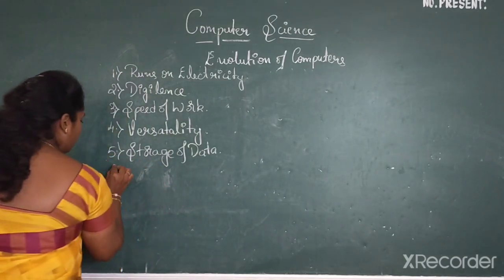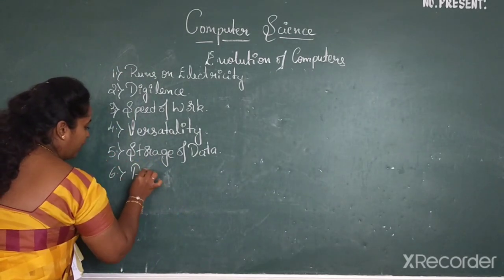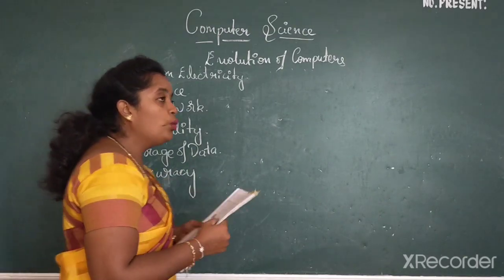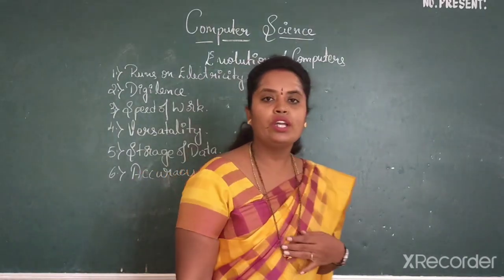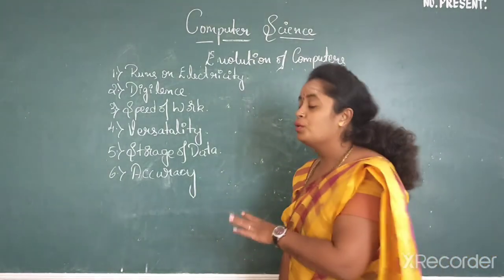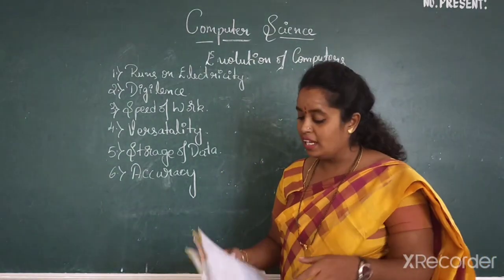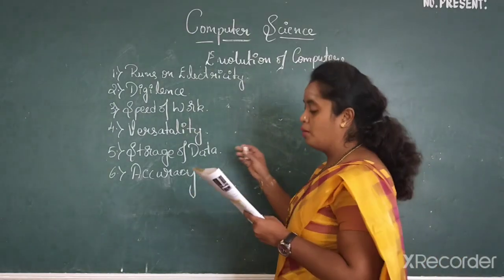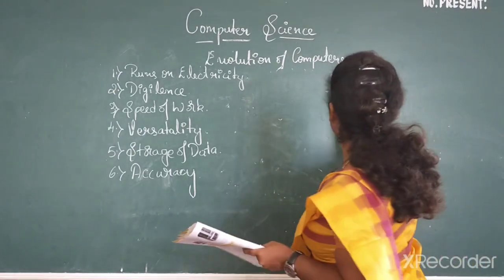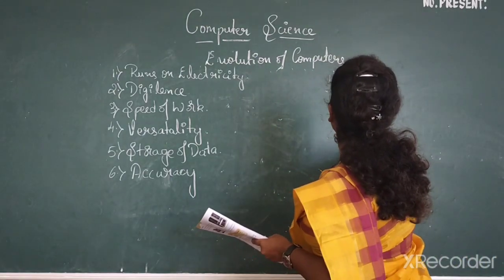Then comes your accuracy. What is this accuracy? Sometimes while doing work, we humans while doing work we end up doing some mistakes. But the computer doesn't do that. That's the accuracy in computer. Then moving on to limitations of computer.